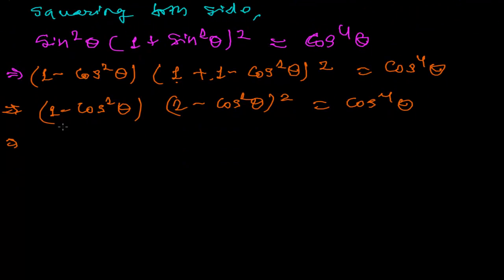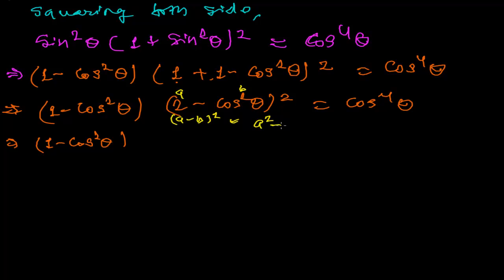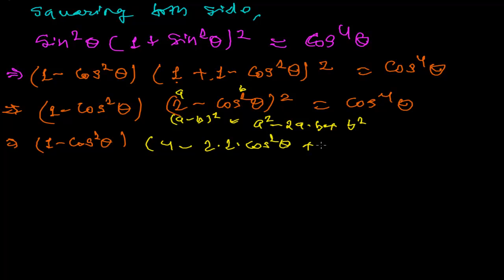Now I expand (2 - cos²θ)² using the (a - b)² = a² - 2ab + b² formula, where a = 2 and b = cos²θ. This gives 2² - 2·2·cos²θ + (cos²θ)², which equals 4 - 4cos²θ + cos⁴θ. So we have (1 - cos²θ)(4 - 4cos²θ + cos⁴θ) = cos⁴θ.